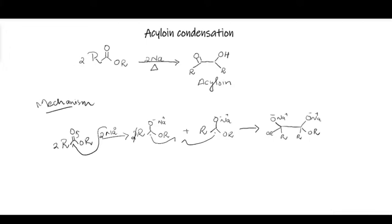Because we have two oxyanions, this is an unstable situation, so this anion collapses back to form the carbonyl moiety, which will push the alkoxy group out of the system. As a result we will have the formation of two ketones. This removes the alkoxy groups, which will be taken by the sodium ions, and as a result we will have the formation of a 1,2-diketone.